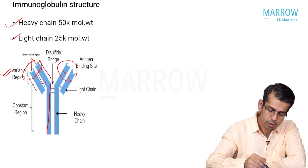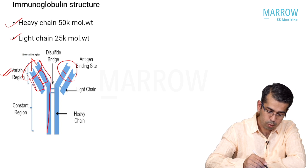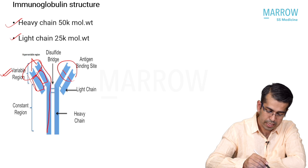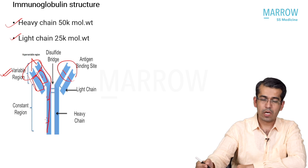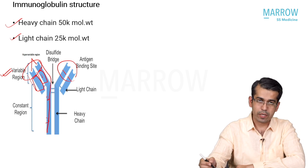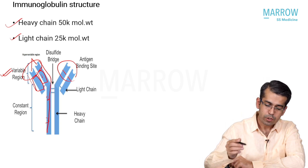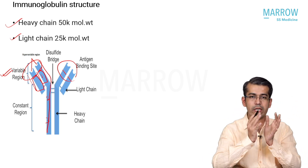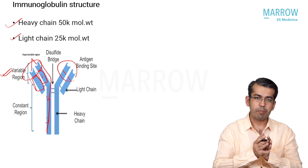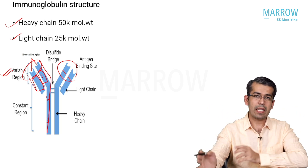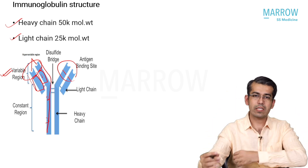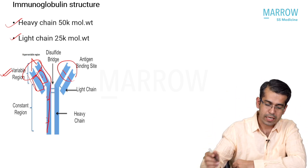The light chain has only one constant portion, whereas the heavy chain has three constant portions: CH1, CH2, and CH3. So the heavy chain is bigger and medial, the light chain is smaller and lateral, and the distal variable regions constitute the antigen-binding domain.